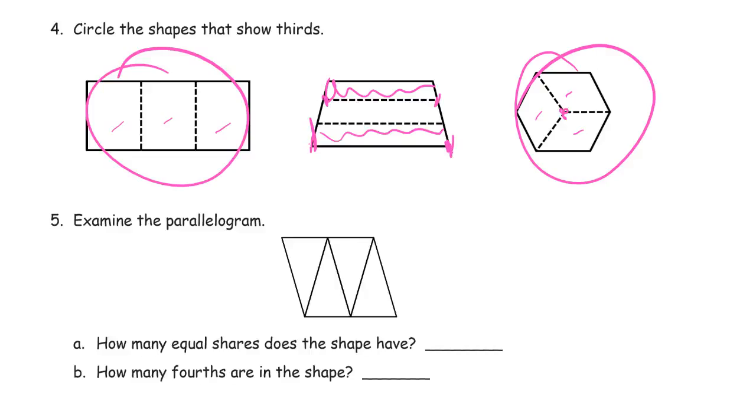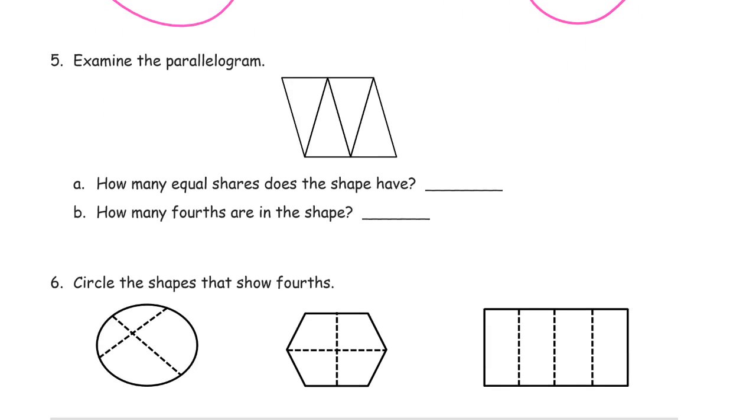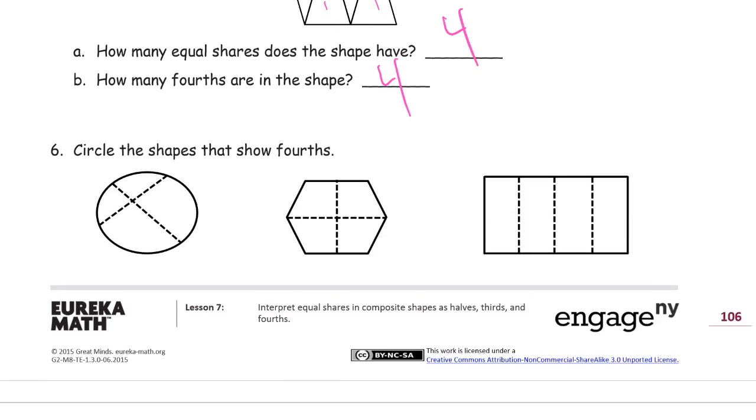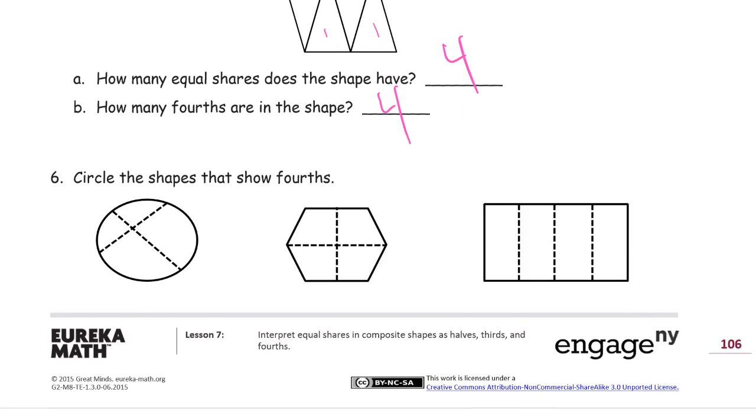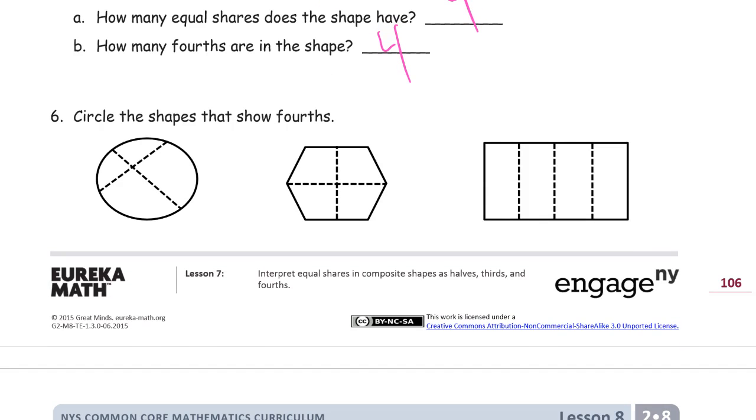And now we're looking at another parallelogram, and there's one, two, three, four triangles in here. They look like they're the same triangle. We'll call them equal. How many equal shares does this shape have? It's got four. I just counted them. And how many fourths are in the shape? There are four fourths. Now, fourths is our unit, and we're counting. There's four of them, so there's four fourths.